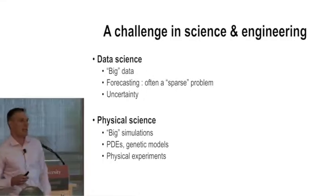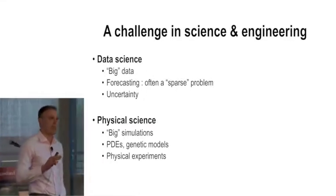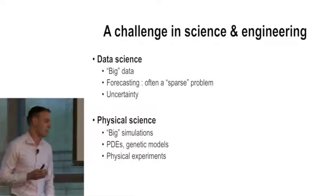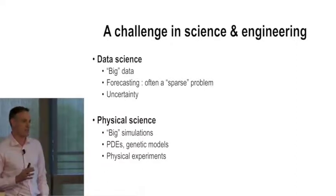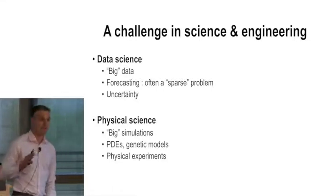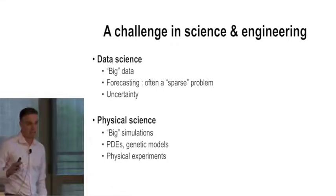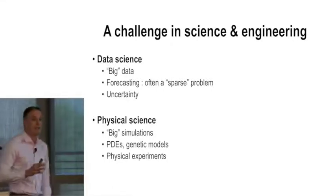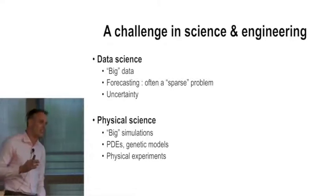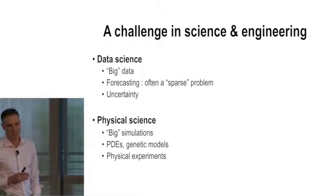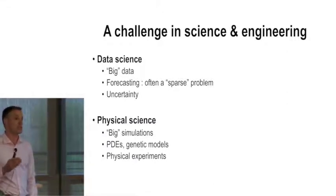So I think this conference can be framed in a bigger challenge in science and engineering that I've seen in many areas of research. We're dealing with two big areas of science: data science and physical science. In data science, we talk about big data, but often big data for me is, if you're forecasting, it's still really a sparse problem. It's still a problem about uncertainty, and certainly in the area that I work with, this is very important.